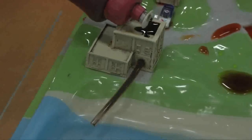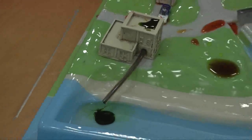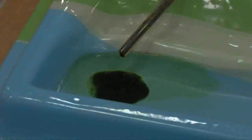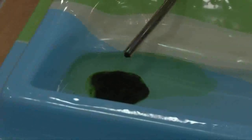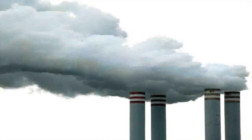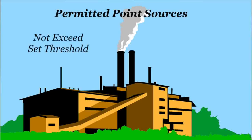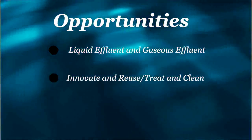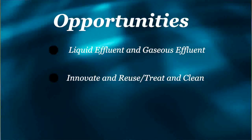People buy many products as consumers. Industries and manufacturing plants manufacture raw input into output. The manufacturing process can produce byproducts such as liquid effluent that is treated or not treated and piped directly back into our waterways, or gaseous effluent which is treated or not treated and released into the atmosphere through smokestacks. Sometimes liquid effluent is released at a high temperature, which is considered thermal pollution. As permitted point sources, industries and manufacturing plants must not exceed a set threshold for specific pollutants. Fines for non-compliance are levied. Keep liquid effluent and gaseous effluent out of our waterways in the first place. Innovate and reuse effluent as other industrial input. Treat and clean with new technologies before releasing into the environment.